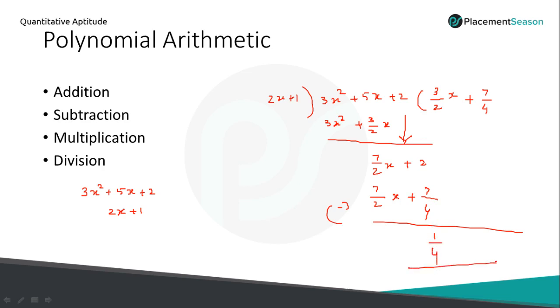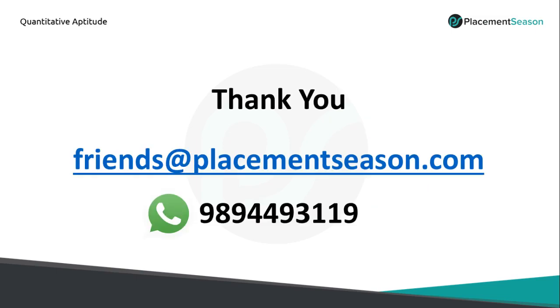So the quotient is 3/2 x plus 7/4, and the remainder is 1/4. This is the way you do polynomial division. Thank you.